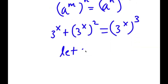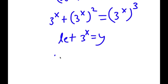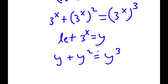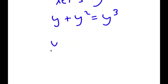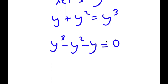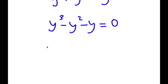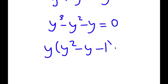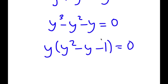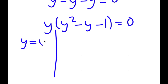I'm going to let 3 to the power of x equal y. So now I have y plus y squared is equal to y to the power of 3. This can be rewritten as y cubed minus y squared minus y is equal to 0. Factoring out y, I get y times y squared minus y minus 1 is equal to 0.